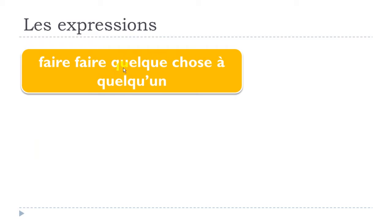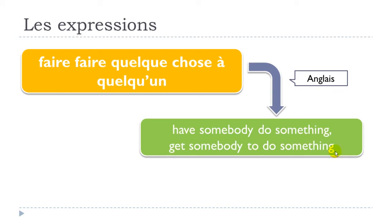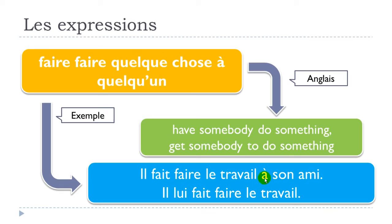The expression is: faire faire quelque chose à quelqu'un. No mistakes here — you have the verb faire two times. The expression goes: faire faire quelque chose à quelqu'un. Let's see the translation in English and one example: il fait faire le travail à son ami.